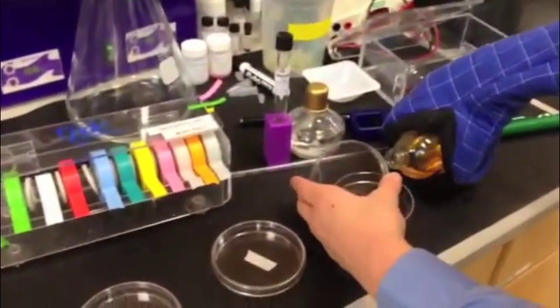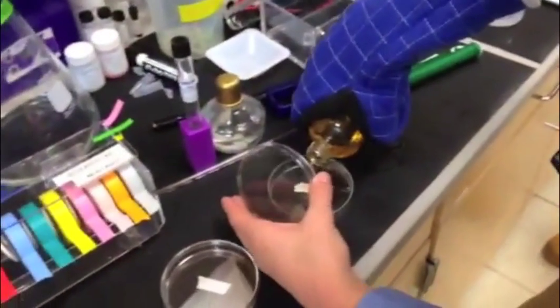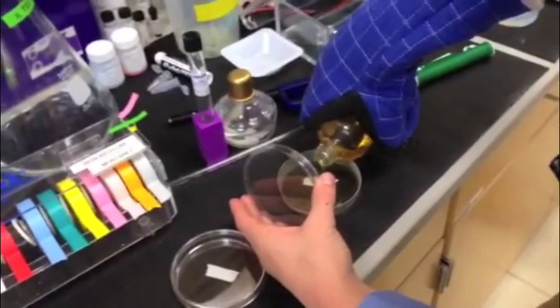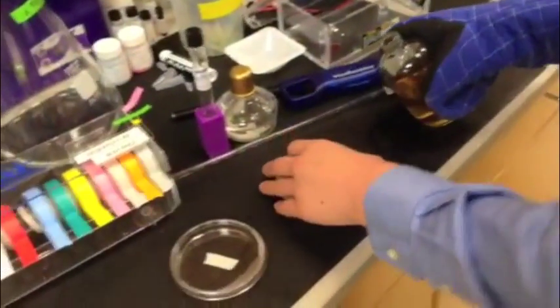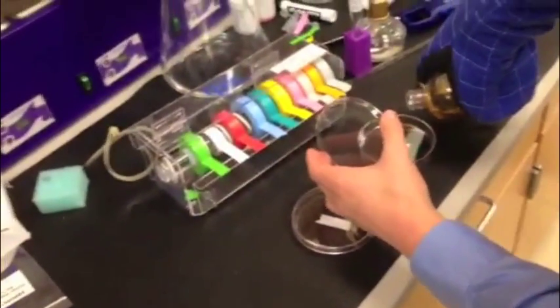Here, as you can see, Bryce is pouring the agar into the first petri dish, our control petri dish, to create a base containing nutrients for the E. coli cultures to grow on and feed off of.